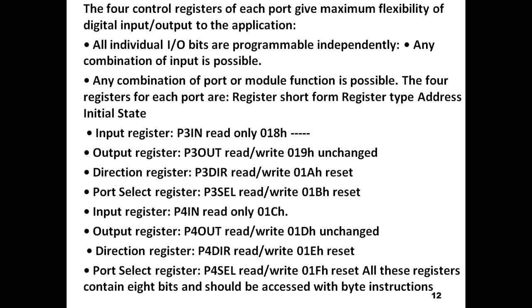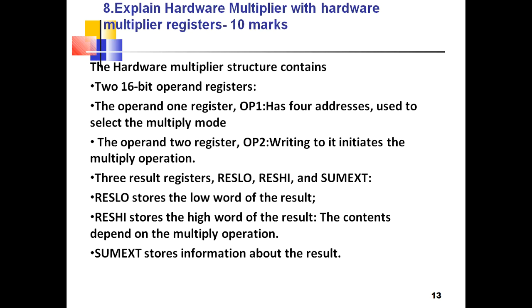The next question is: explain the hardware multiplier with hardware multiplier registers, asked for 10 marks. Some microcontrollers use software instructions to perform multiplication, but the MSP430 uses hardware — a hardware multiplier with dedicated registers. It has two 16-bit operand registers. Operand 1 register OP1 has four addresses used to select the multiply mode. Operand 2 register OP2, when written to, initiates the multiplication. First you select the multiplier mode, then perform the operation by writing the numbers.